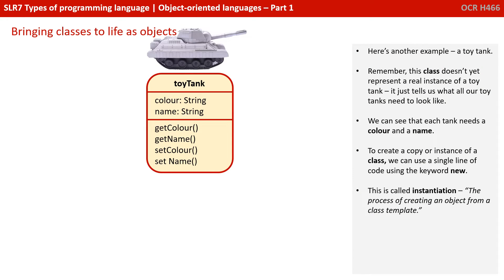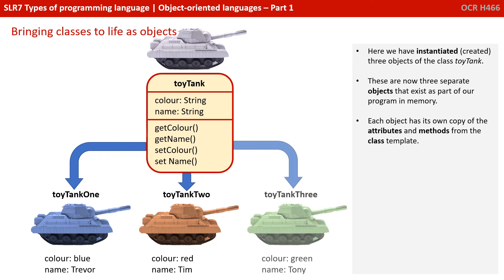Here's another example, this time a toy tank. Remember, this class doesn't yet represent a real instance of a toy tank — it just tells us what all our toy tanks need to look like. We can see that every tank needs a colour and a name. To create a copy or an instance of the class, we can use a single line of code using the keyword new. This is called instantiation, the process of creating an object from the class template. So here we've instantiated or created three objects of the class toy tank. These are now three separate objects that exist in memory, each with its own copy of the attributes and methods from the class template.